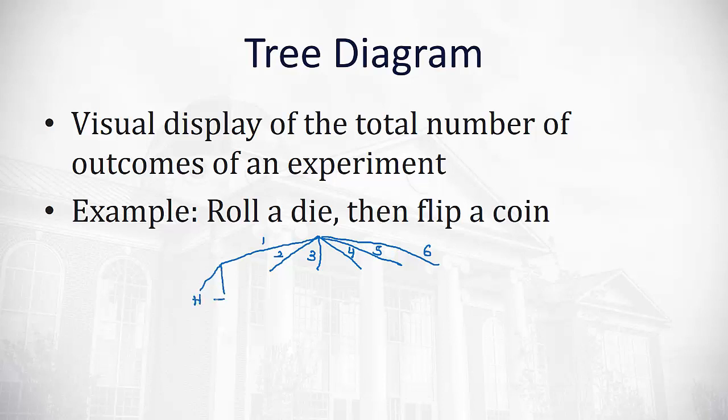So after rolling a one, we'll either get a heads or a tails. After rolling a two, we'll either get a heads or a tails. After rolling a three, we'll either get a heads or a tails. And similarly, four gives us heads and tails, five gives us heads and tails, and six gives us heads and tails. And so if I go down all the branches of this tree, we'll see all the possible outcomes of the sample space.